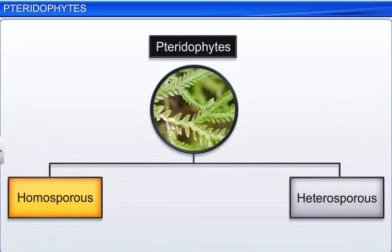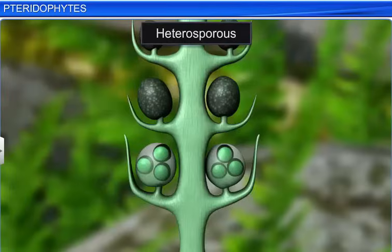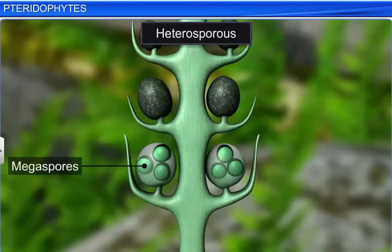Pteridophytes can be homosporous or heterosporous. Homosporous pteridophytes produce spores of similar kind, while heterosporous pteridophytes produce two different types of spores: large or megaspores, and small or microspores.